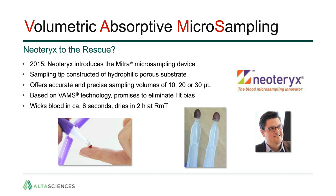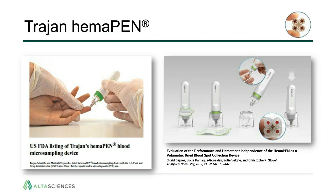Another volumetric approach is the Trajan Hema pen, which received FDA approval as a Class 1 device on July 2nd for therapeutic and in vitro diagnostic use. It collects blood via four integrated 2.74 microliter micropapillaries, depositing blood on pre-cut paper discs when the cap is replaced. In our experience it was straightforward to implement, with the advantage of quadruplicate sampling for biobanking whilst eliminating tampering risk and maintaining sample integrity, with desiccant stored in the barrel of the pen.